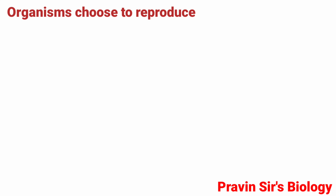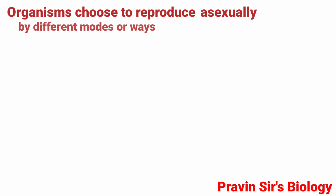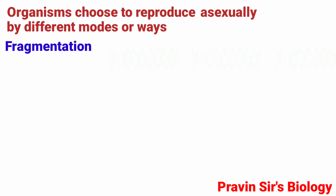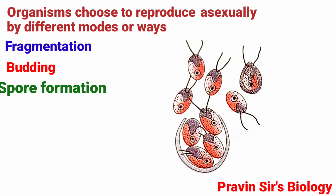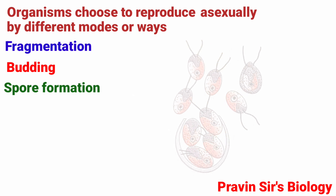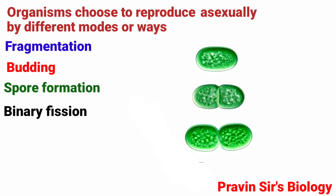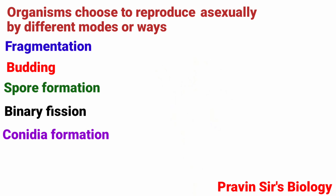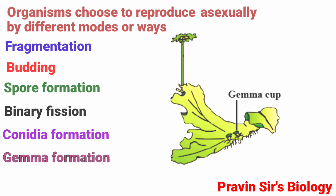Organisms choose to reproduce asexually by different modes or ways. These are fragmentation, budding, spore formation, binary fission, conidia formation, and gemma formation.